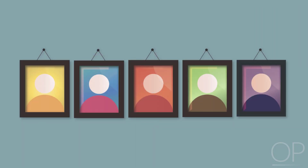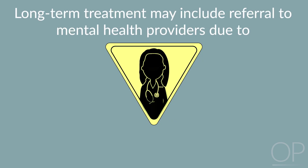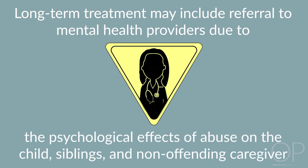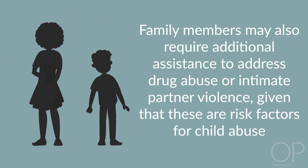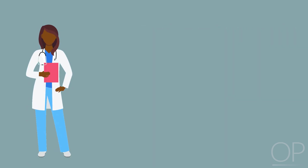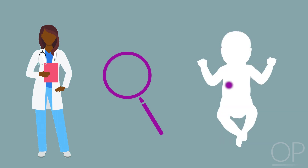Full evaluation of siblings for abuse may be indicated. Ultimately, long-term treatment may include referral to mental health providers due to the psychological effects of abuse on the child, siblings, and non-offending caregiver. Family members may also require additional assistance to address drug abuse or intimate partner violence, given that these are risk factors for child abuse. The pediatrician plays a key role in the prevention of child abuse. A child's pediatrician may be the first to recognize sentinel signs of child abuse meriting further evaluation, such as a bruise in a non-ambulatory infant.